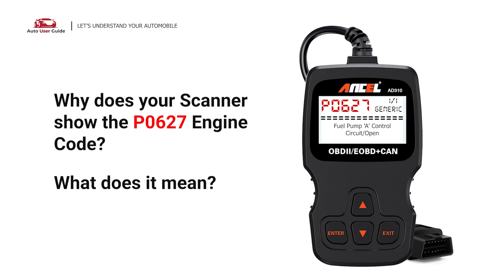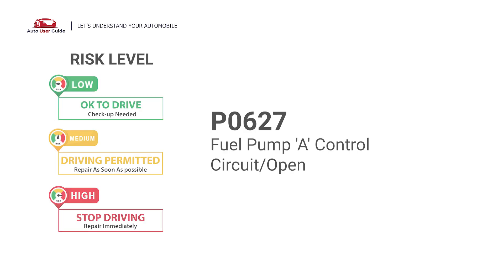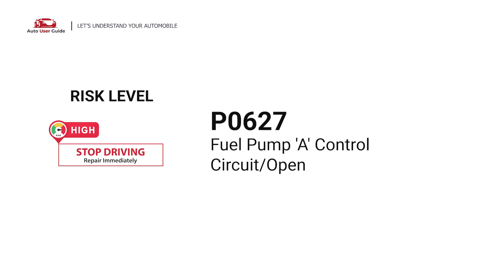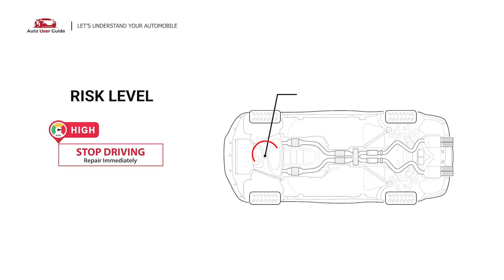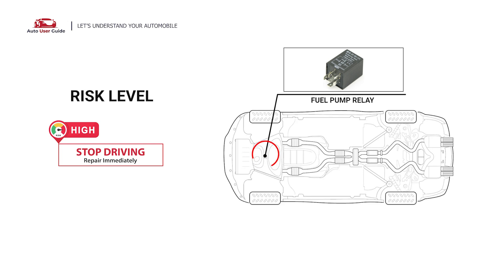Why does your scanner show the P0627 engine code? What does it mean? P0627 is a diagnostic trouble code for fuel pump A. It indicates that there is a malfunction detected within the fuel pump A. Under this circumstance, stop driving and repair your vehicle immediately.